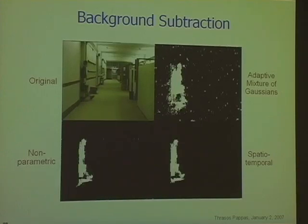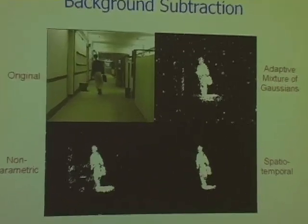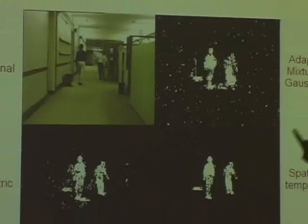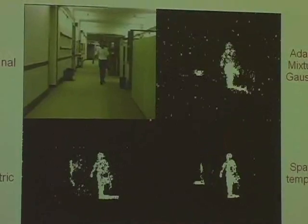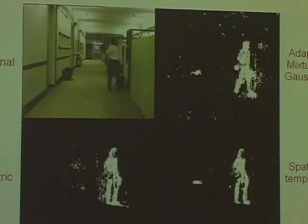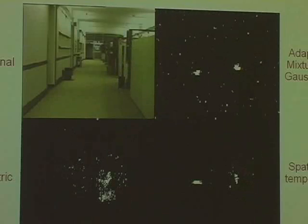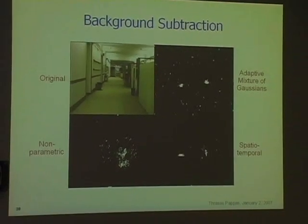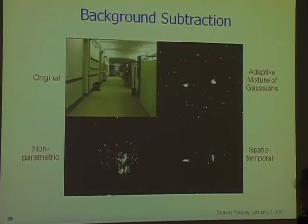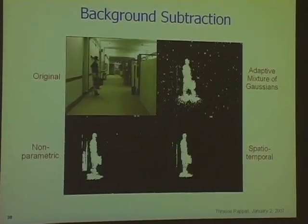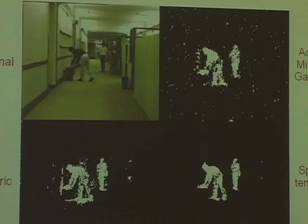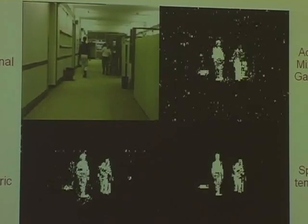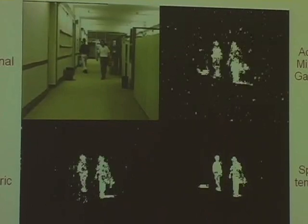Here is an example — an indoor scene. This is the Stauffer-Grimson approach, this is the El Gamal-Davis approach, and this is our approach. Without post-processing, this is how the raw end looks. We do okay and we're collecting more systematic data. Notice the suitcase — he leaves the suitcase. It's important to know that this was not there before, and in this case we really want it detected. Also, the other guy picks up something, and that is also a change, so we can detect that.